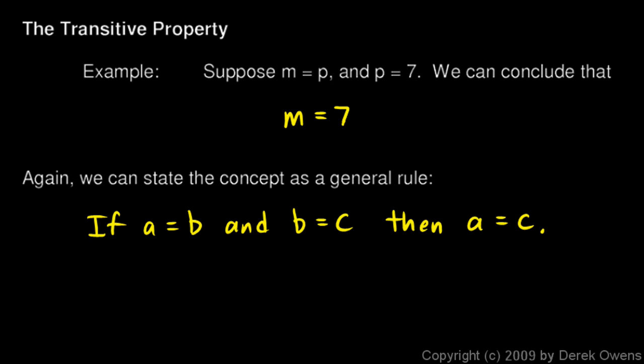And that should make sense. Upon thinking about it for a little bit, you should recognize this as true every single time. For any numbers a, b, and c, if a is equal to b, and b is equal to c, then a has to be equal to c.